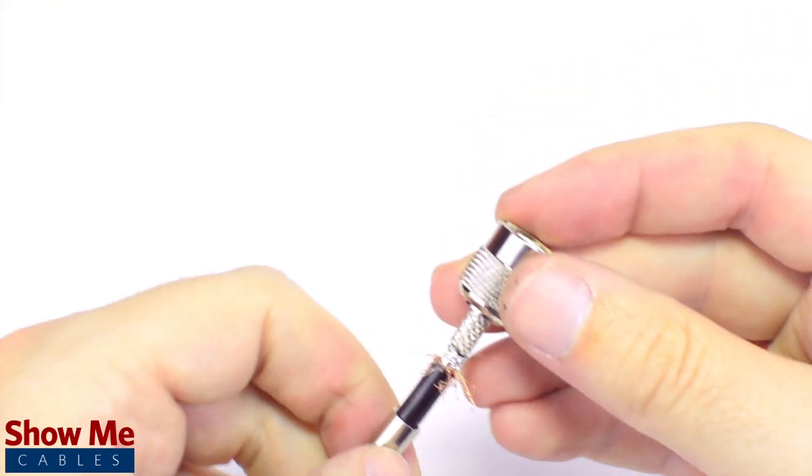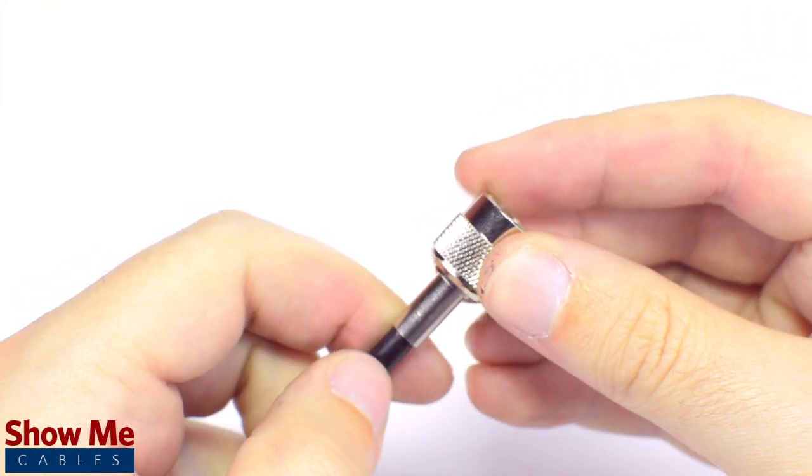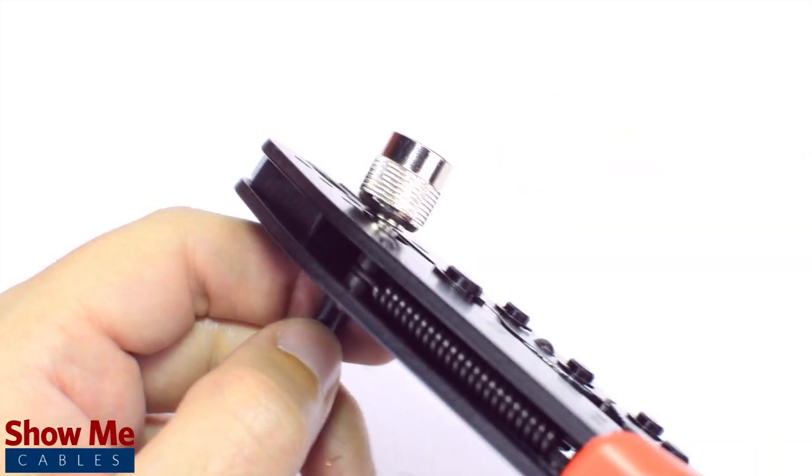Then slide the ferrule up to the base of the connector, folding the shield with it. Crimp the ferrule under the outer jacket to complete termination.